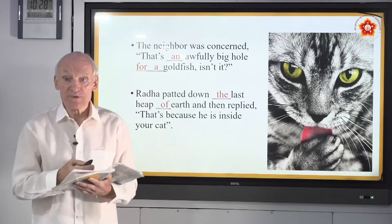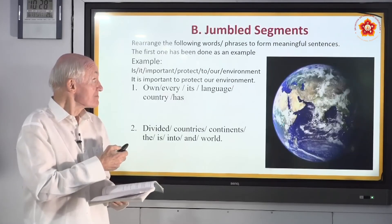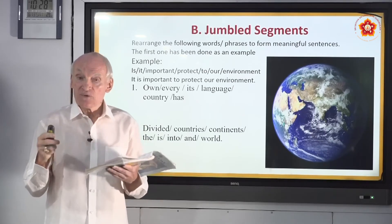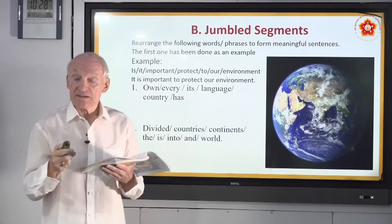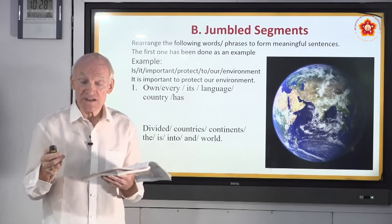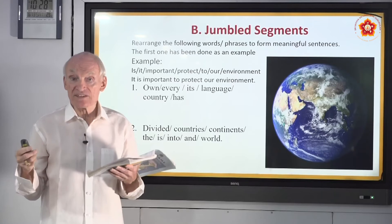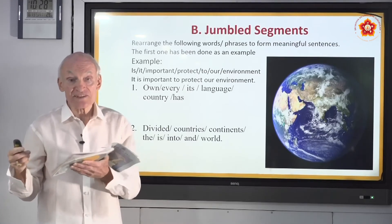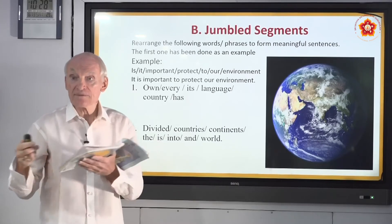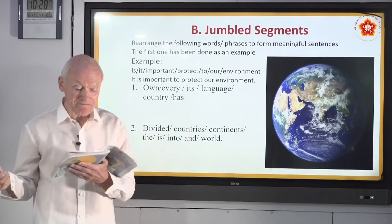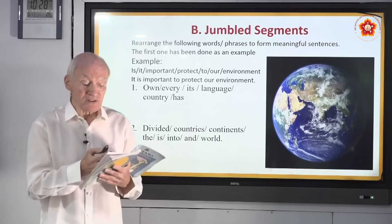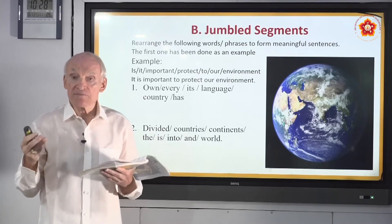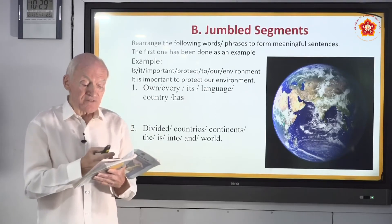Now let's move to jumbled segments — we all love them, it's like a game. The reason words must be in a specific order is that meaning changes depending on word order. There's a proper order: when conveying a message, you usually have a subject — the boy, the girl, the cat — and then the predicate, which tells what's happening with the subject. Rearrange the following words or phrases to form meaningful sentences.